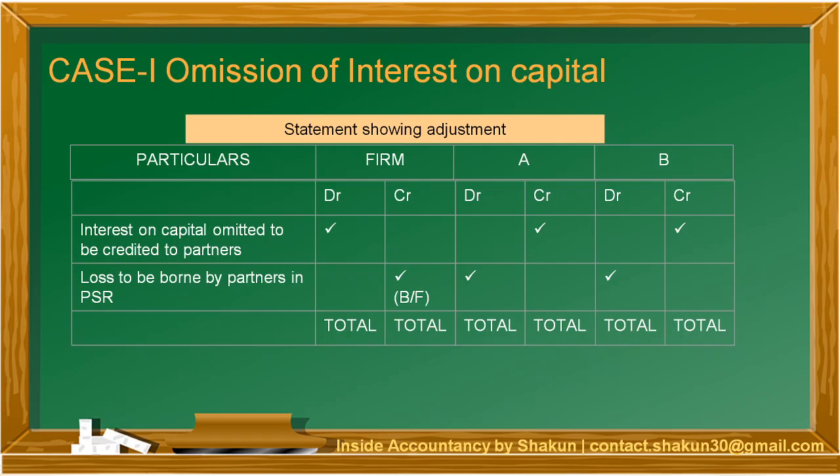Let's take Case 1: omission of interest on capital. If interest on capital has been mentioned in the partnership deed but has not been provided for in the books of accounts, in the partnership accounts, this leads to an error. This error must be rectified by preparing a statement showing adjustment. The format in which the statement showing adjustment is to be prepared is now in front of you.